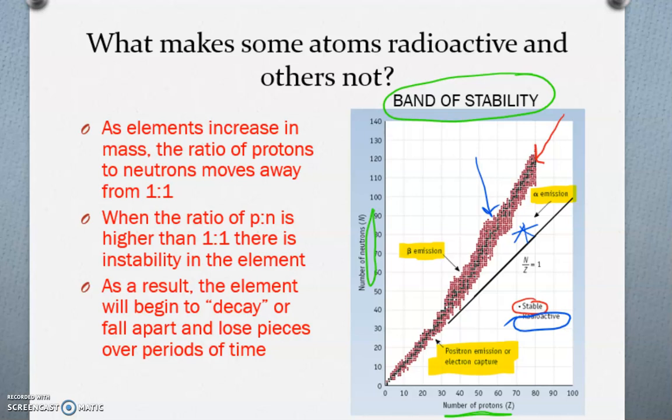And depending on where you fall, so if you fall towards the top of this line, you're going to go through beta emission. If you fall between the red line and this black line, you're going to go through alpha emission. And if you're somewhere down here, you're going to go through positron emission or electron capture.